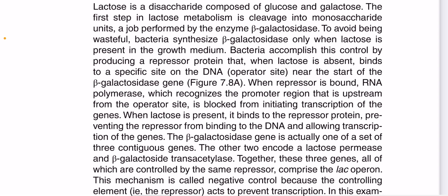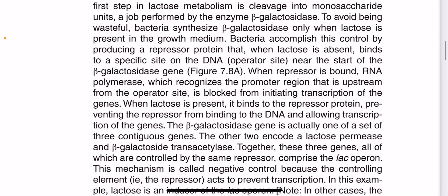When a repressor is bound, RNA polymerase — which recognizes the promoter region — is abstained from the operator site and is blocked from initiating transcription of the beta-galactosidase gene.